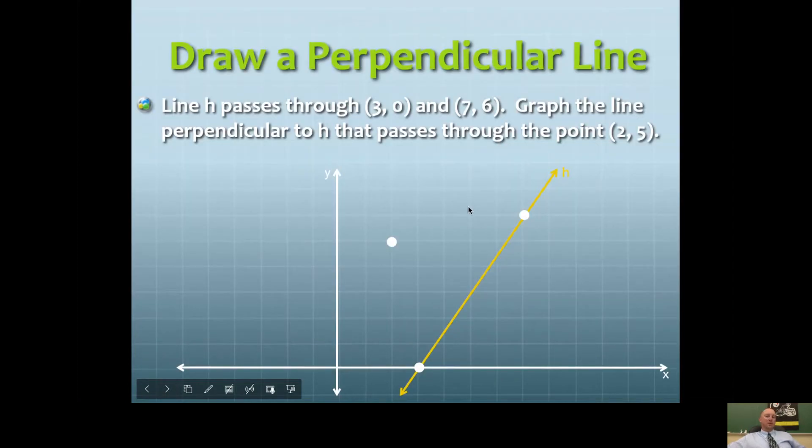We're going to draw a perpendicular line. Line h, that's this yellow one, passes through point (3,0), that's this one, and point (7,6), that's this one.